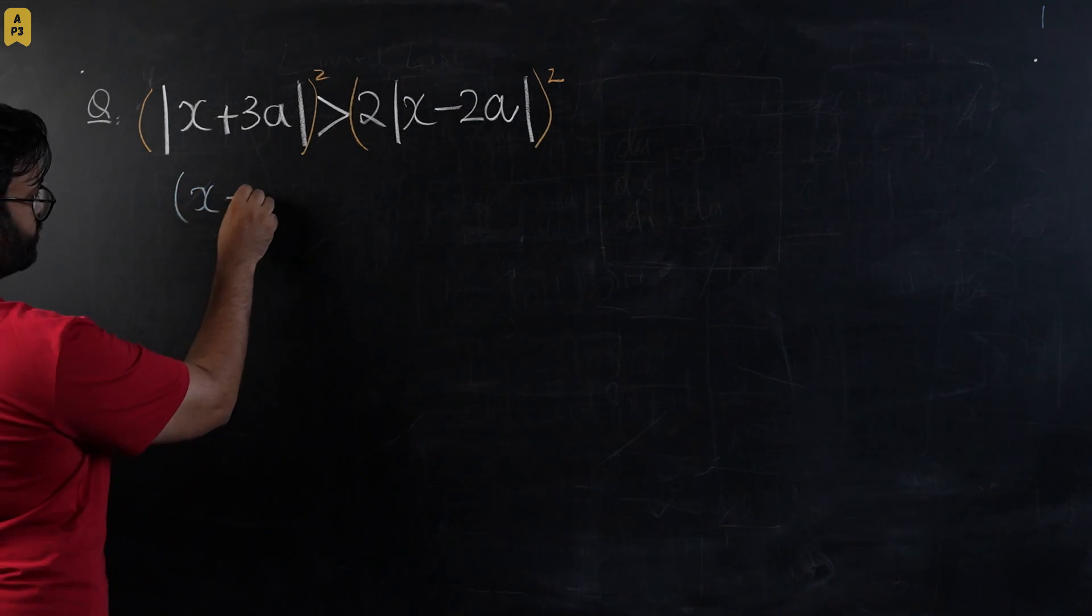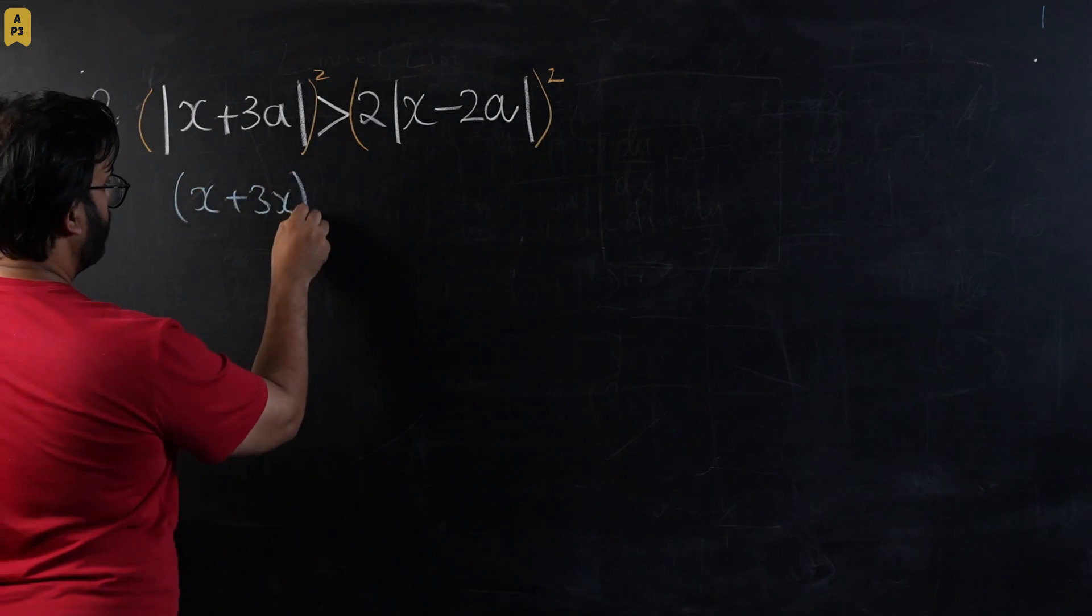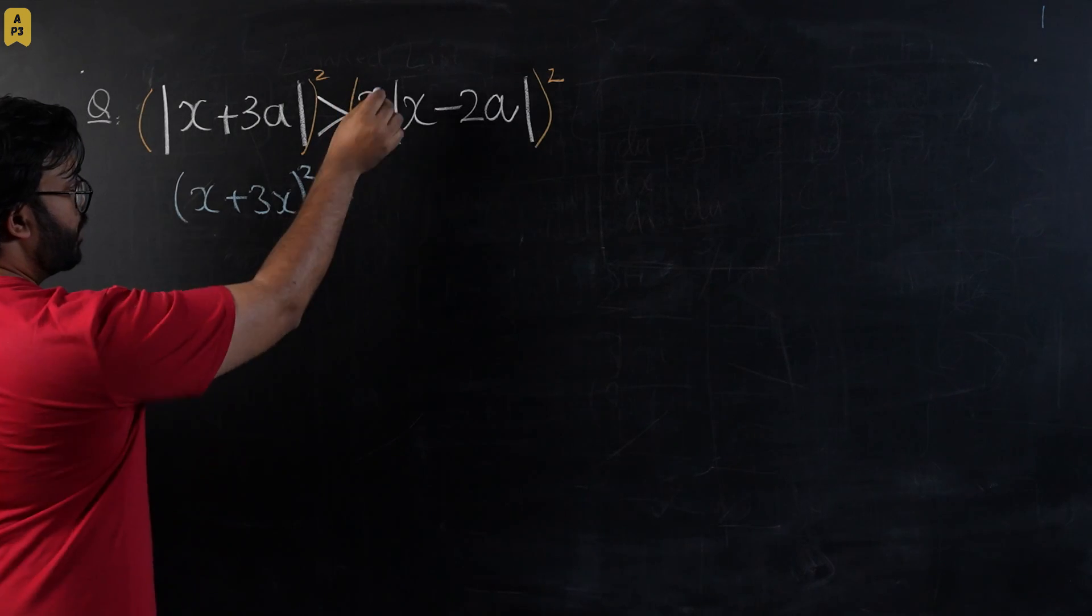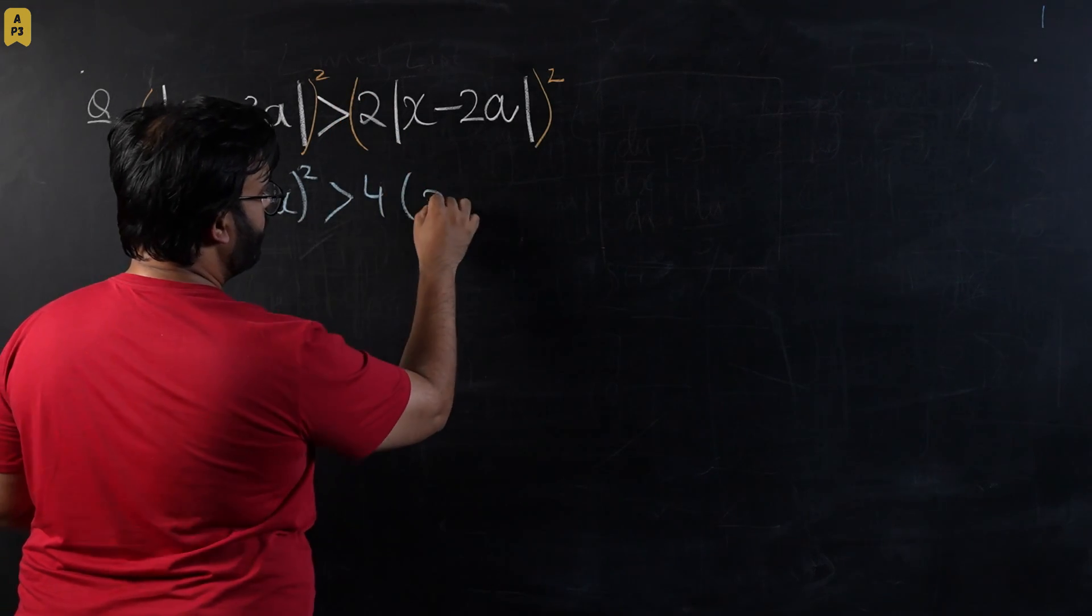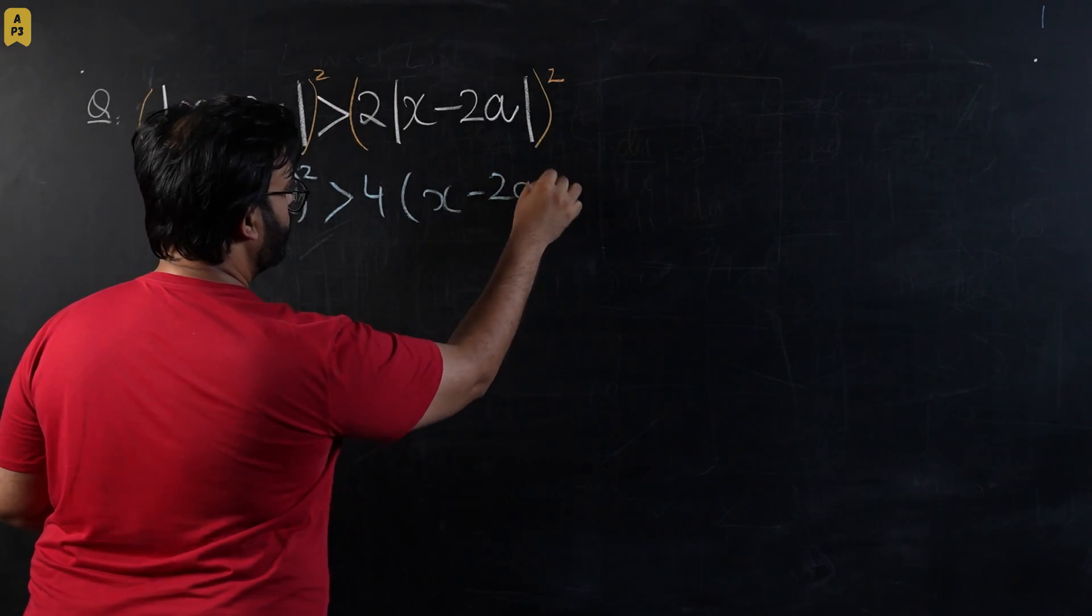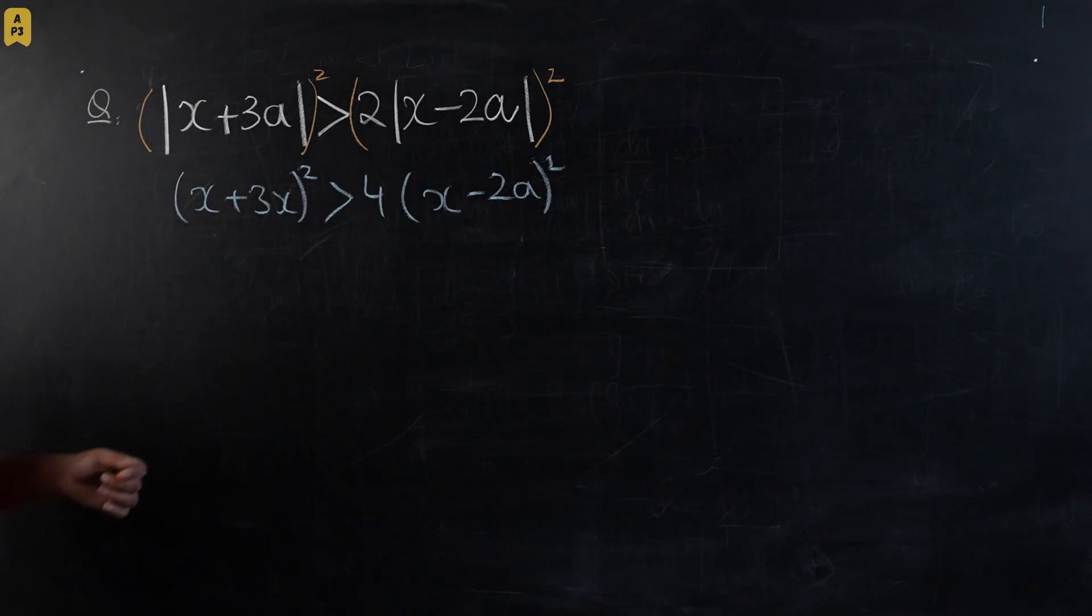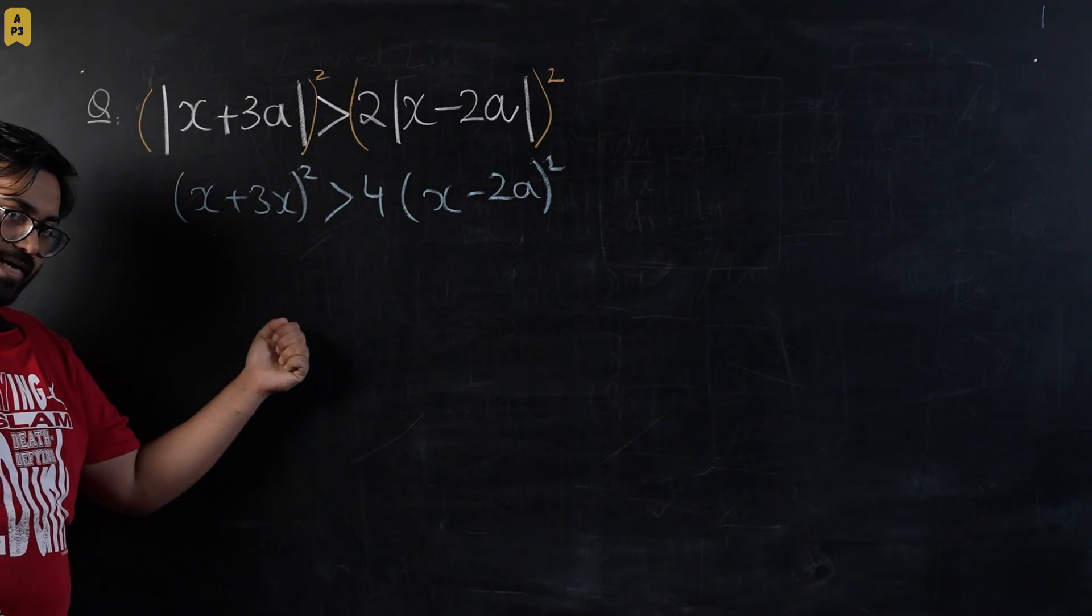We're going to replace modulus function with the whole squares, so 2 squared would be 4 and this will become (x - 2a) whole squared. Now we're going to expand all of this expression and bring everything to one side to make it a quadratic inequality.